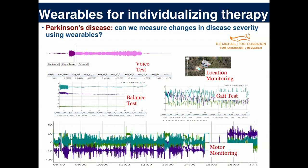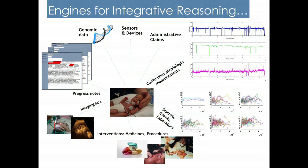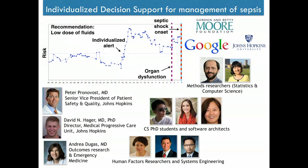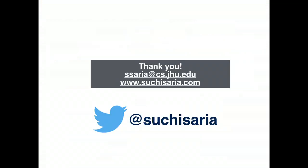I'm going to skip the Parkinson's example and end by saying one of our biggest challenges is going to be how we take this deep heterogeneous data and think about integrating it — what are the frameworks by which we can make inferences that are robust? These are my students and colleagues whose work went into developing this, including colleagues working on sepsis. Thank you.